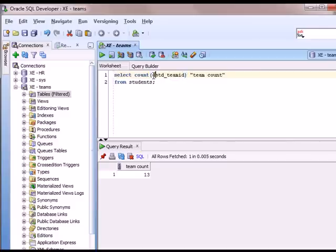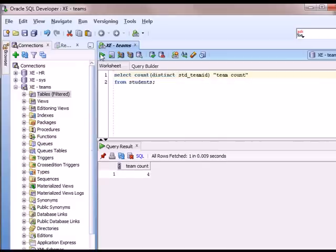But if I add distinct and run that query, then I see that I actually only have four teams in terms of team IDs. So count distinct can be an important feature to use.